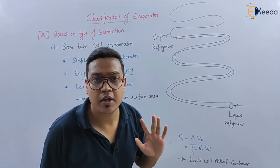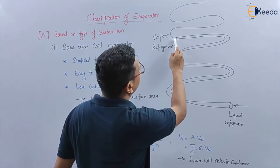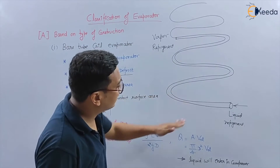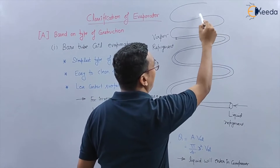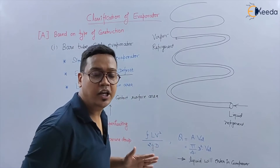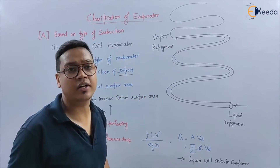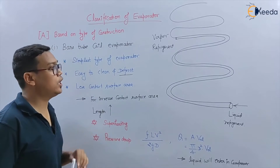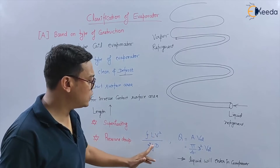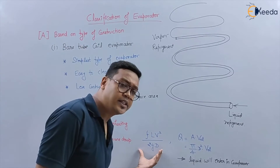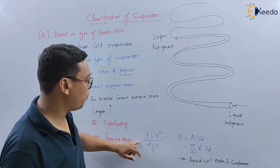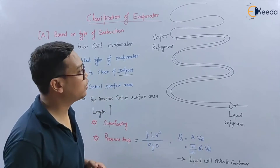Superheating will take place because by increasing the length, the refrigerant takes heat from the extra tubes as well, resulting in additional heat absorption. Also, pressure drop will increase with length, as given by the equation: ΔP = fLV²/2GD. If you increase the length, the pressure drop will increase.